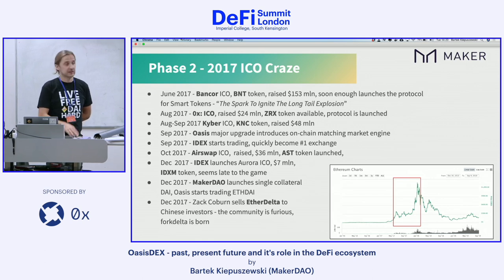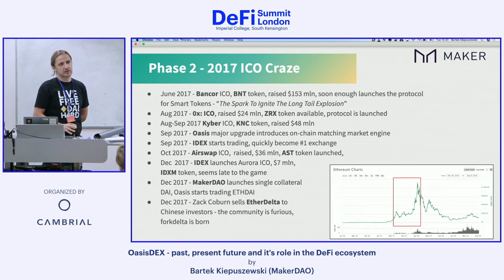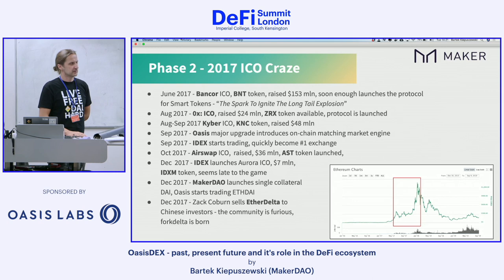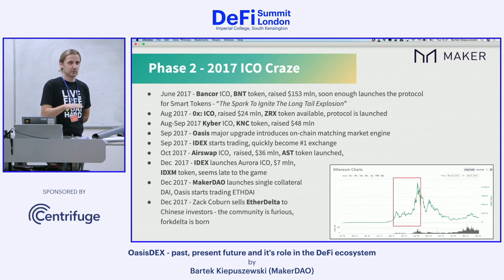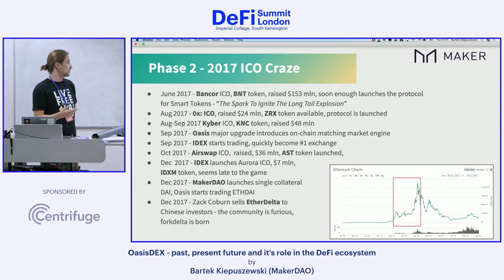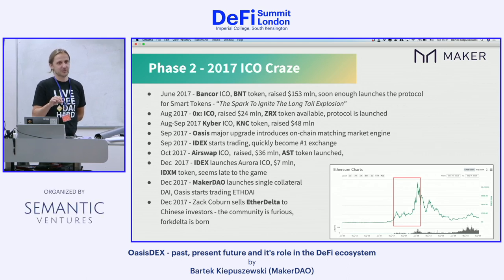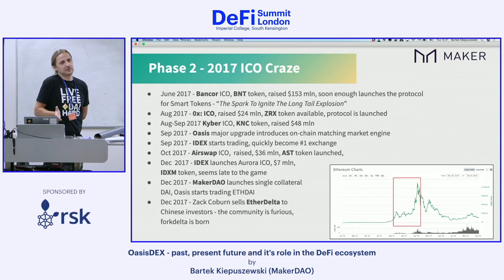In September, right in the middle of the ICO craze, OasisDEX had a major upgrade: we introduced the matching engine, which was plugged into the contract making it much more complex. People said the gas price you have to pay for matching on-chain is just too high, and the argument that 'it's never going to work' was very prominent. In fact, the contract we still use today has a rescue switch button — if matching suddenly breaks, we can go back to the version without matching. We never used it, but that's what it's for.